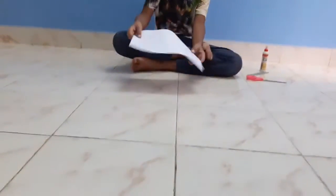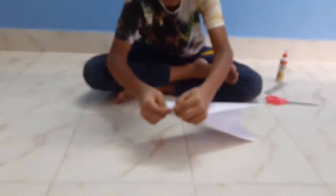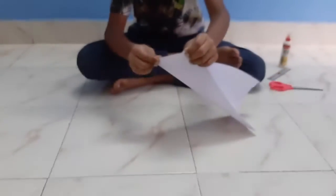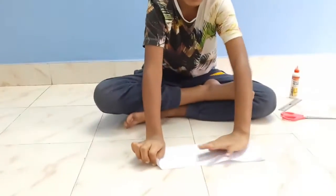First we have to take the paper, then keep it like this and fold it into half like this and match the corner to corner. And crease it.